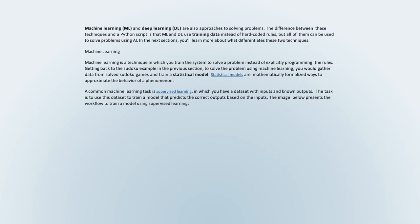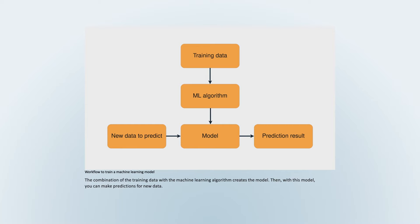Machine learning is a technique in which you train the system to solve a problem instead of explicitly programming the rules. Getting back to the Sudoku example, to solve the problem using machine learning, you would gather data from solved Sudoku games and train a statistical model. Statistical models are mathematically formalized ways to approximate the behavior of a phenomenon. A common machine learning task is supervised learning, in which you have a dataset with inputs and known outputs. The task is to use this dataset to train a model that predicts the correct outputs based on the inputs. The combination of the training data with the machine learning algorithm creates the model.